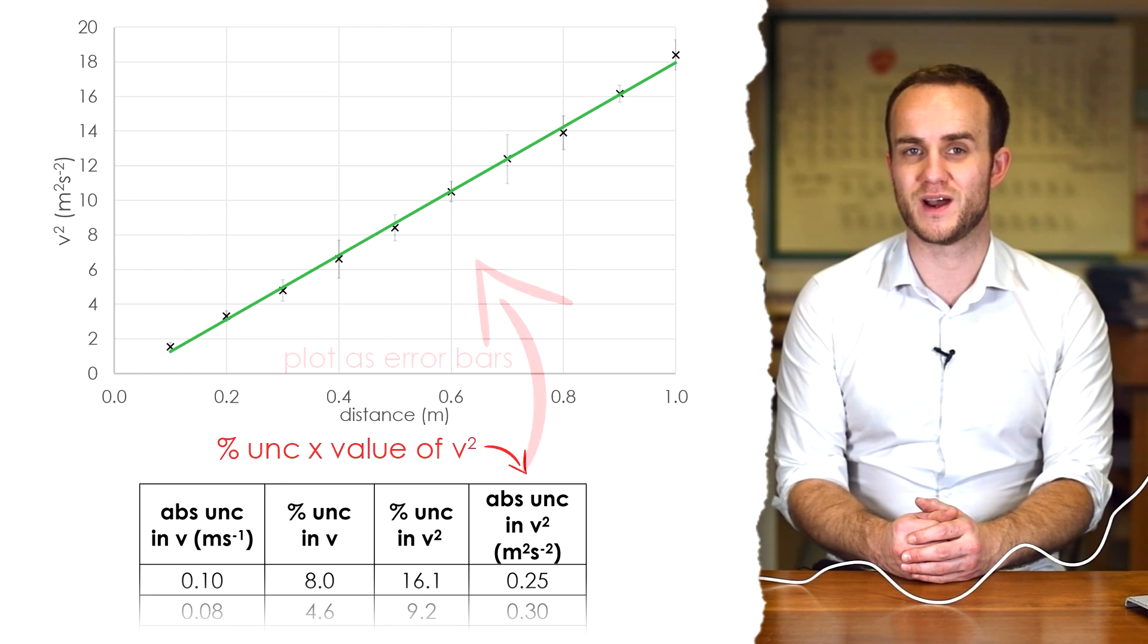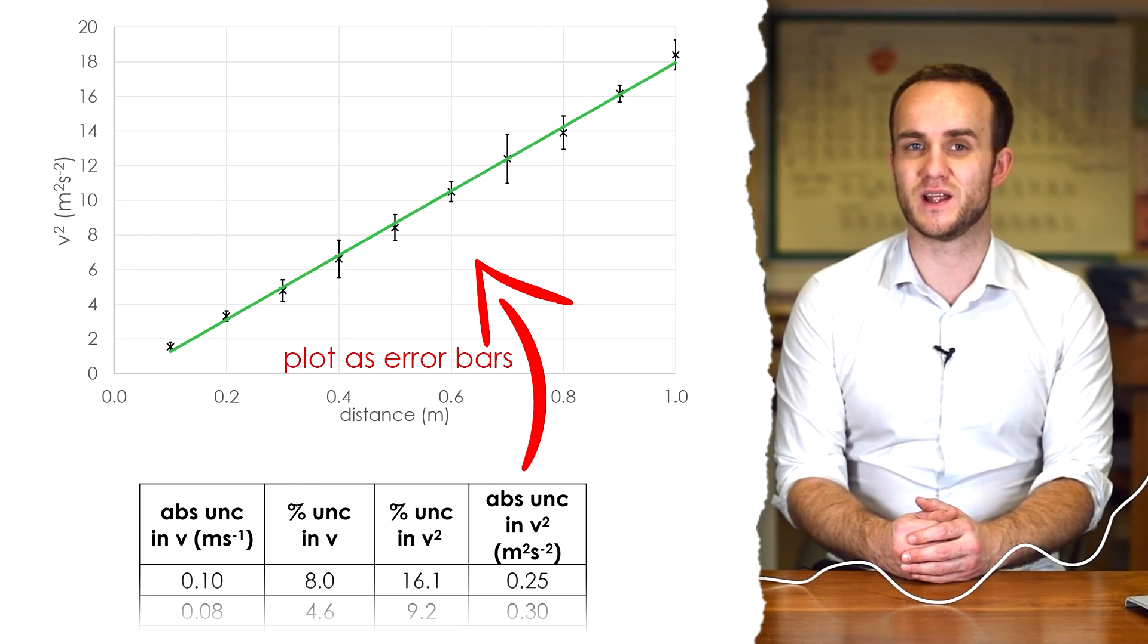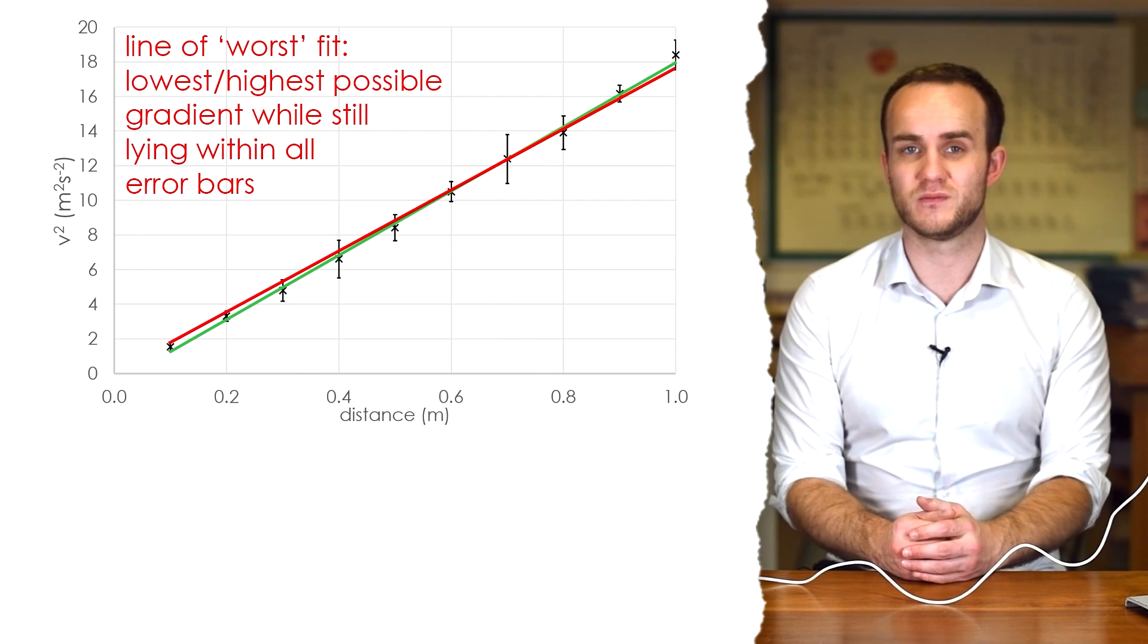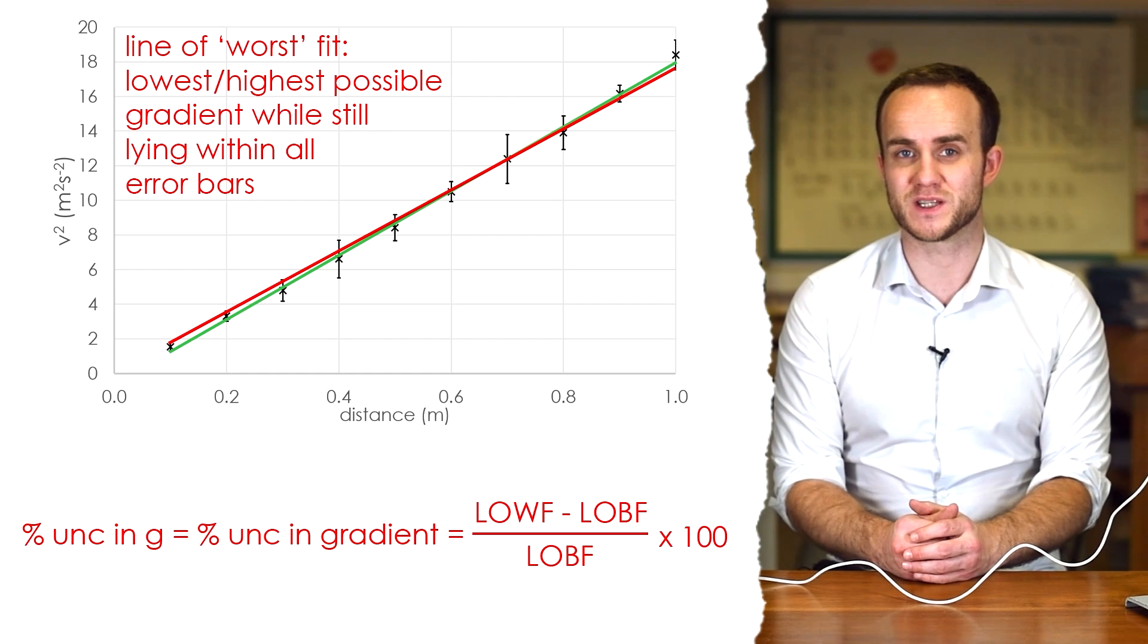Plot that on our graph as error bars, then find a line of worst fit. To find the percentage uncertainty in your gradient, then we take the gradient of the line of worst fit, take away the line of best fit, divide by the line of best fit's original gradient and then times by 100.